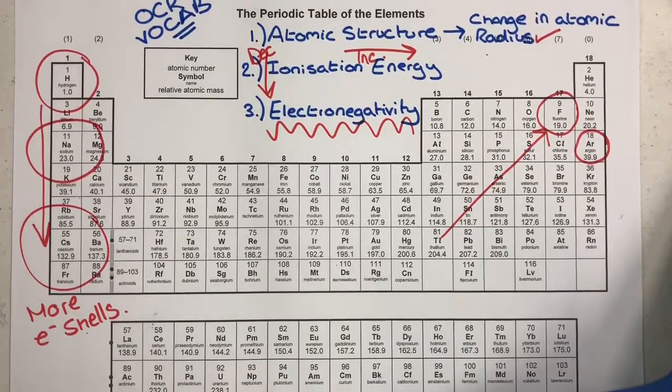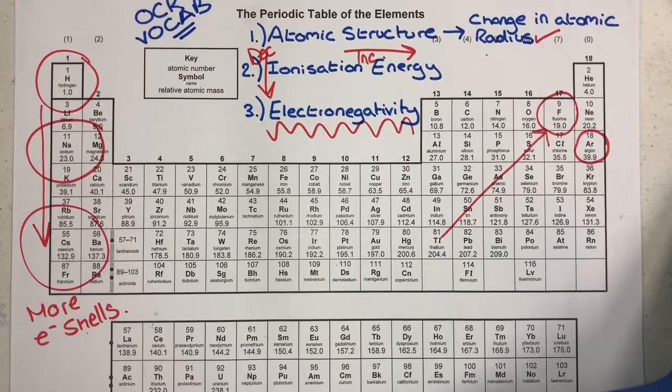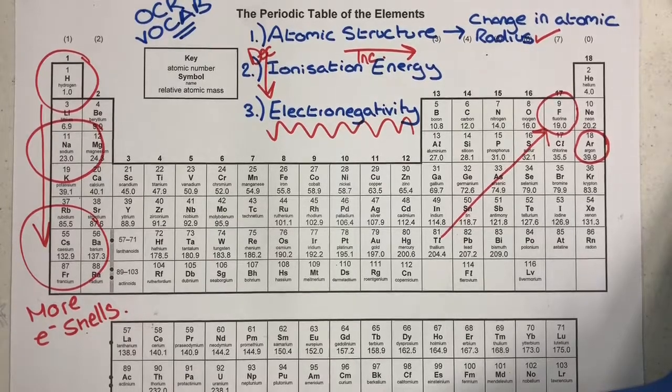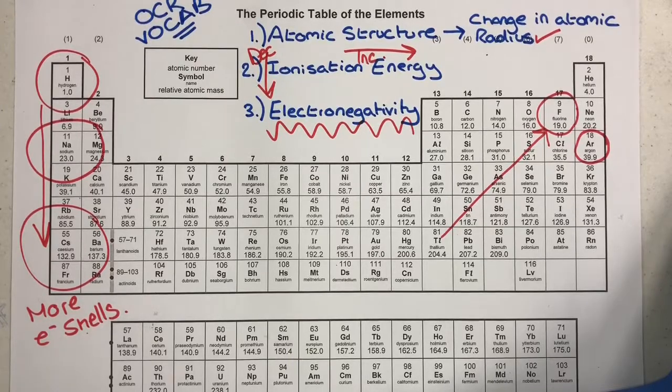You can also use that description as a general reason for why fluorine is a powerful oxidizing agent. Obviously that would be in the formula F2. But it's the same descriptors: we're talking about low shielding, a smaller atomic radius, and a stronger attraction to electrons.